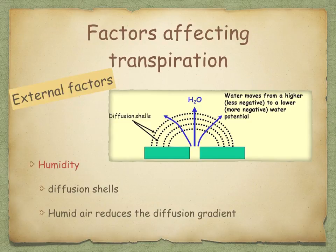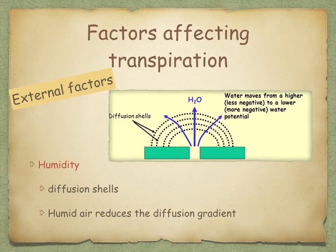External factors affecting transpiration include humidity. As shown in this diagram, a series of diffusion shells form in still air around the stomata. Humid air reduces the diffusion gradient between the leaf air spaces and the atmosphere, so an increase in humidity decreases the rate of transpiration.